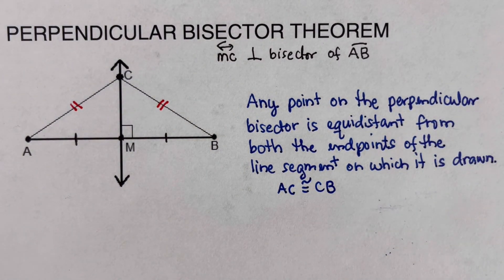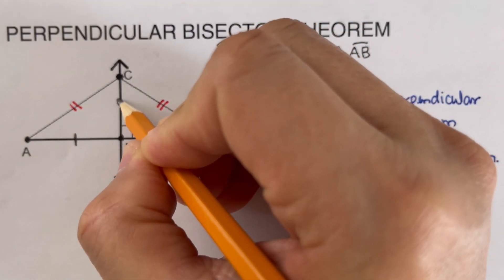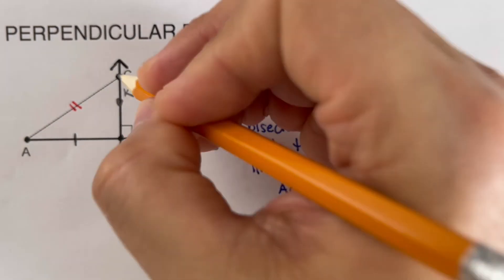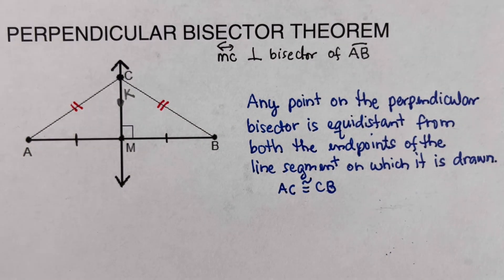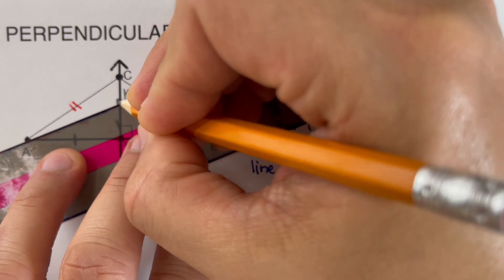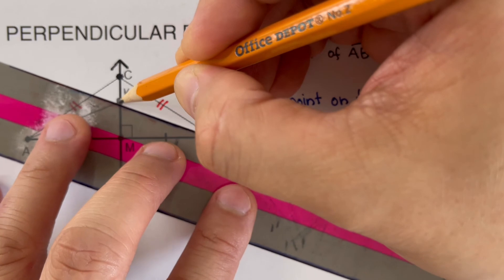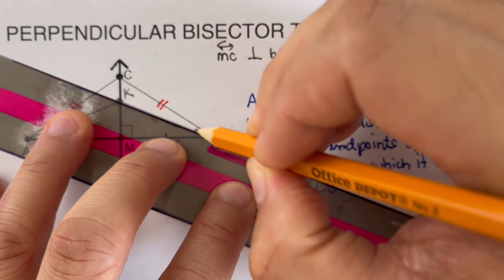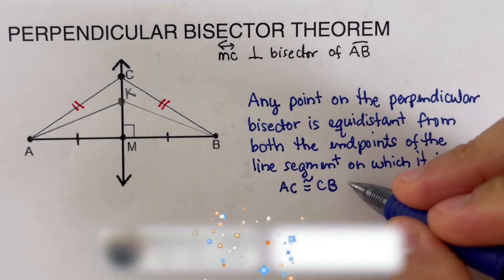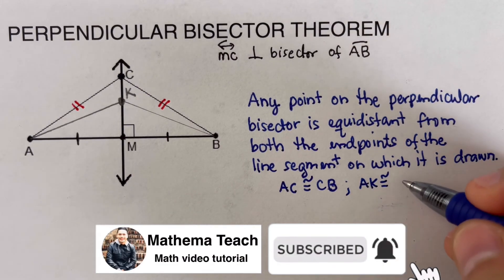What happens if we add more dots? If we put another dot and call it K, we can draw a line segment from point K to point A that is equidistant to the segment from K all the way to B. So we can say that AK is congruent to KB.